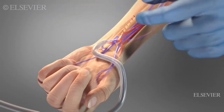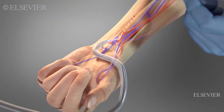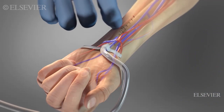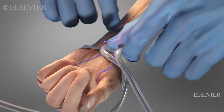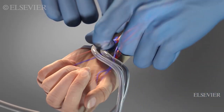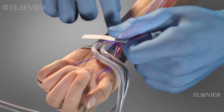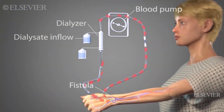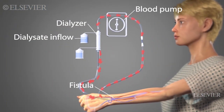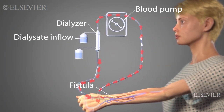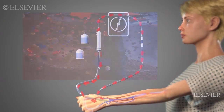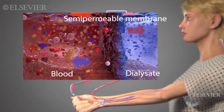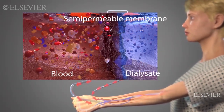In hemodialysis, blood is pumped out of the artery, through the fistula or graft, and into a dialyzer. There, blood and dialysate, or dialyzing solution, flow across a semi-permeable membrane in an enclosed container.